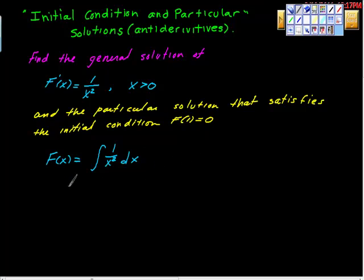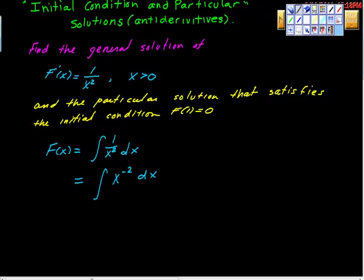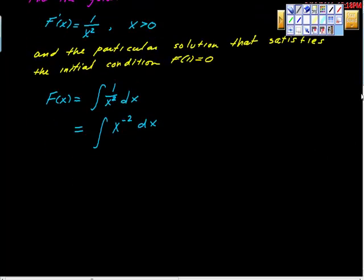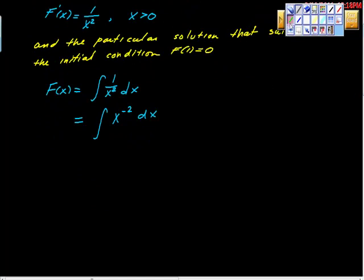We're going to do a rewrite, as always. When we do our rewrite, we get the antiderivative of x to the negative second power dx. From this, we can start to integrate — we're going to do our integration here.